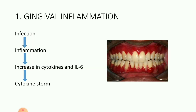Now coming on to the oral lesions. The first and foremost lesion is gingival inflammation. This infection gives rise to inflammation in the tissues. Because of this inflammation, there is an increase in cytokines and interleukins, most specifically interleukin-6, and this leads to the cytokine storm. Because of this cytokine storm, there is gingival inflammation which leads to tissue breakdown and redness of the gingival.